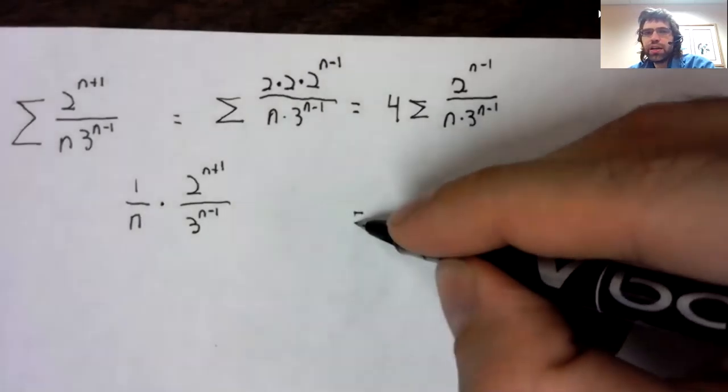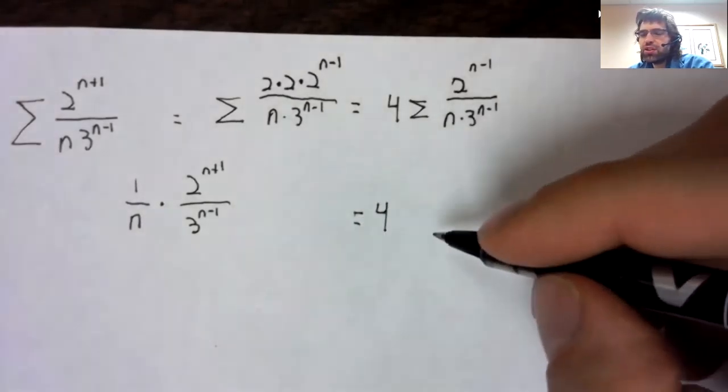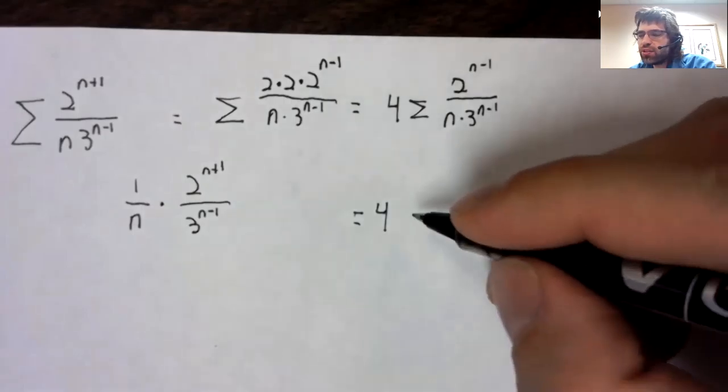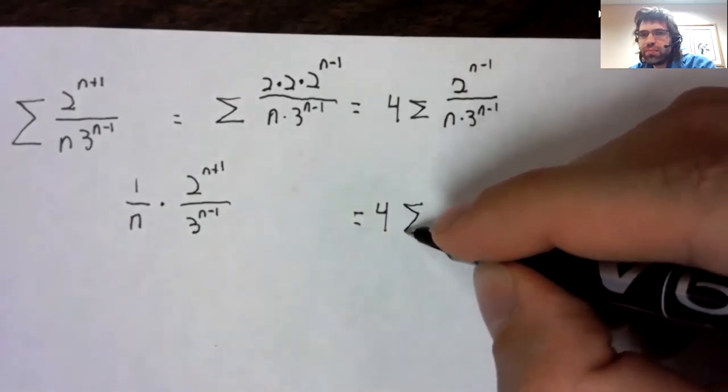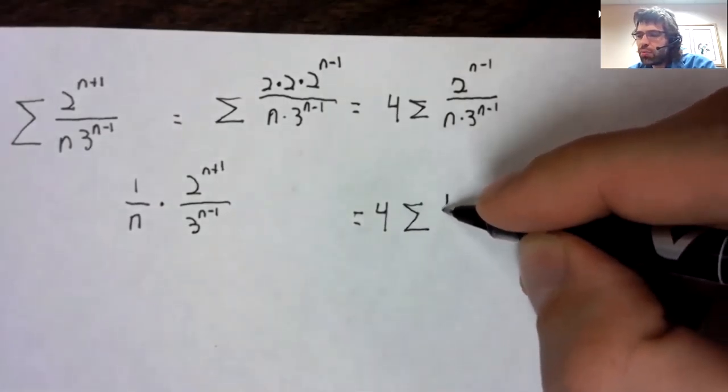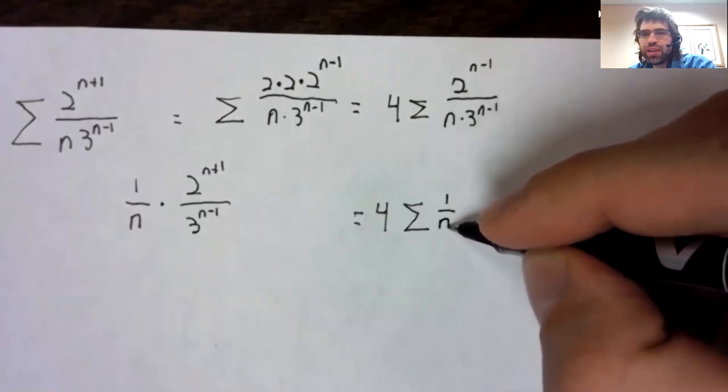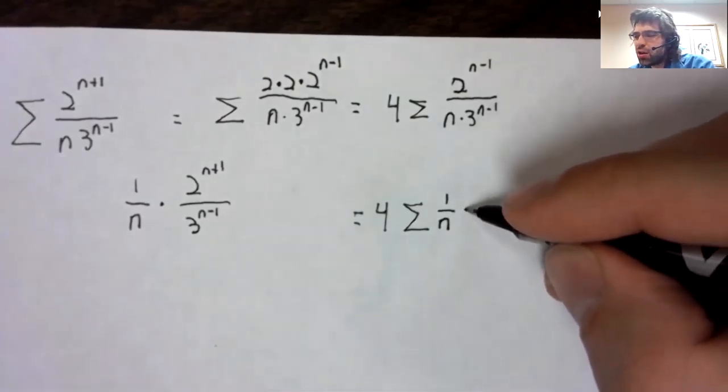And we can pull constants out of series. And now we're basically done. Although we still have to formalize this and make it a correct argument.